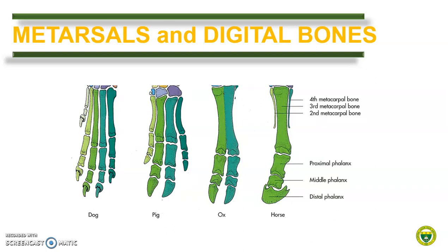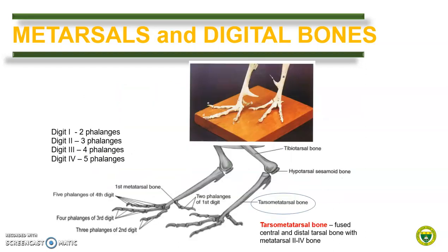For the remaining bones of the pelvic limb — the metatarsals and digital bones — the pattern is the same as in the thoracic limb of horse and pig. In carnivores, the first metatarsal bone is even more reduced than in the front limb and the first digit is often absent. In ruminants, the fifth metatarsal bone is absent, and a metatarsal sesamoid bone, often called the small metatarsal or metatarsal 2 bone, is present. In birds, the central tarsal bone and the distal tarsal bones fuse with metatarsals 2, 3, and 4 forming the tarsometatarsal bone, meaning there is no individual tarsal bone in birds. The first metatarsal bone remains a separate structure while the fifth metatarsal bone is missing. The tarsometatarsus bears a bony process for the spur, which is more developed in males than in females, and distally it articulates with the phalanges of the digits.